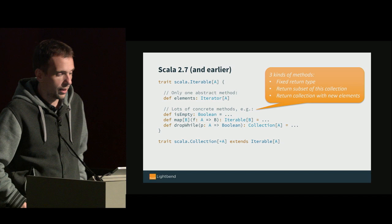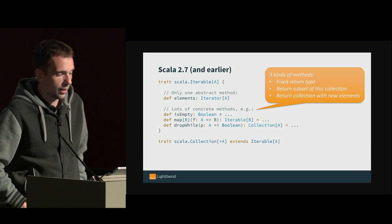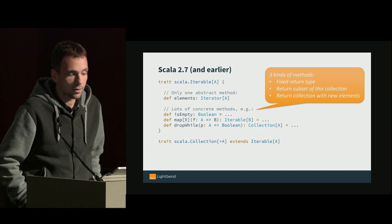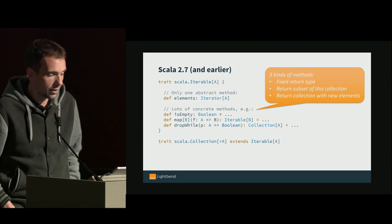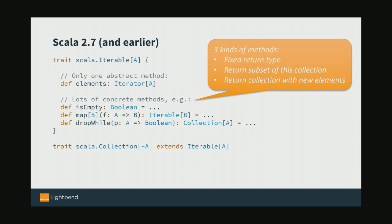This is how it looked in Scala 2.7. We have a trait Scala.Iterable. It has a single abstract method that gives you an iterator and a lot of concrete methods like isEmpty, map, and dropWhile. I selected those three for a specific reason because we basically have three different kinds of methods defined on collection types.